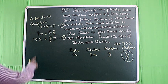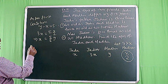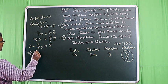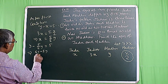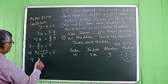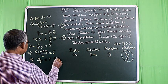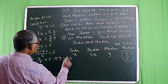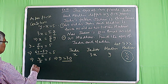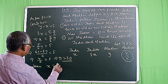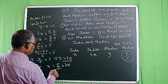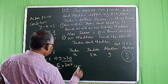Substituting X in equation 1: Y minus 5 by 6 Y equal to 5, which implies 6Y minus 5Y by 6 equal to 5, which implies Y by 6 equal to 5, therefore Y equal to 30. So the age of Modhu is 30. Hence X equal to 5 by 6 into 30 equal to 25. Therefore the ages of Yodhu and Modhu are 25 and 30 years respectively.